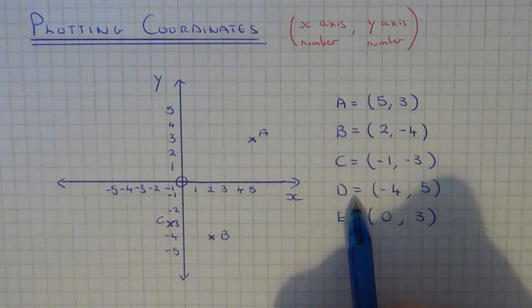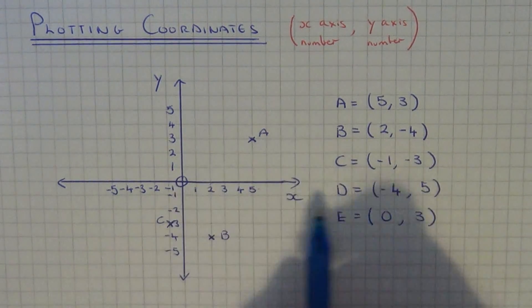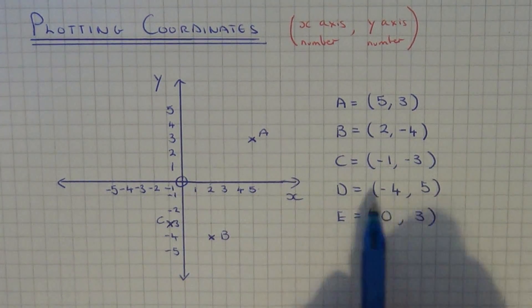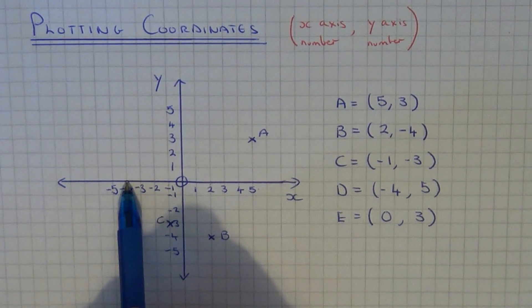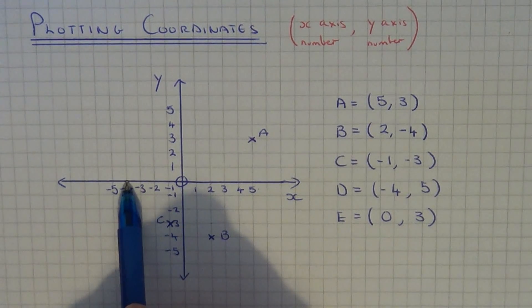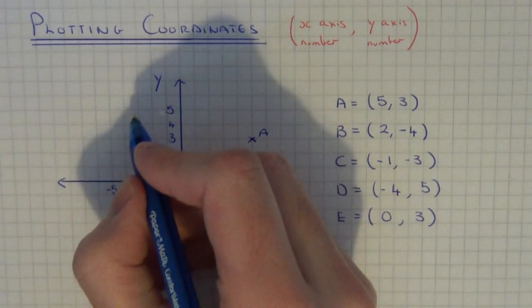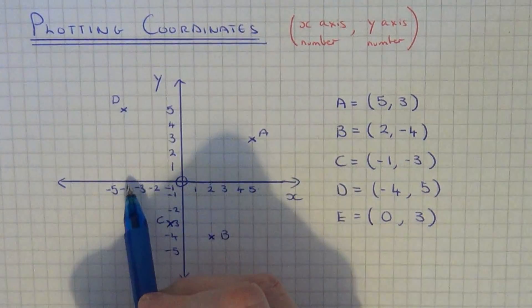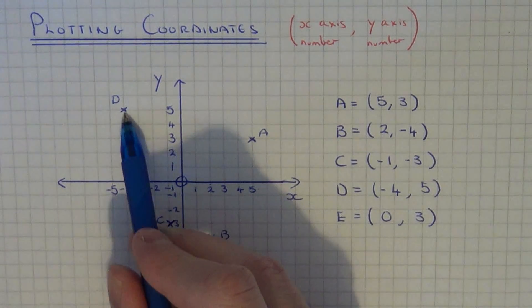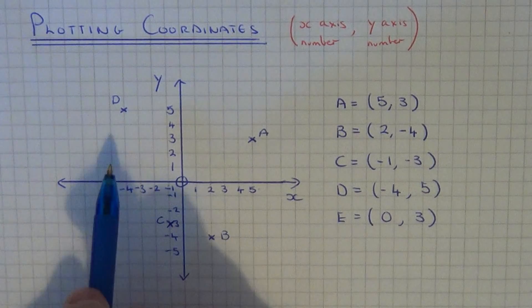Let's do the next one. So coordinate D is at minus four, five. So this time the x-axis number is minus four, so let's look for minus four which is here. The y-axis number is plus five, so this means we need to go five up — one, two, three, four, five. So coordinate D is here. Again you can check it because we have minus four on the x-axis and plus five on the y-axis.